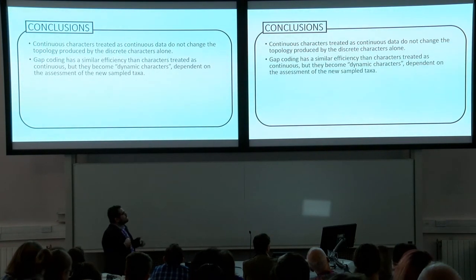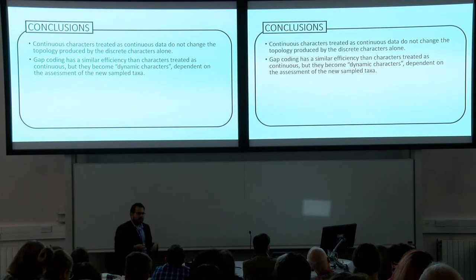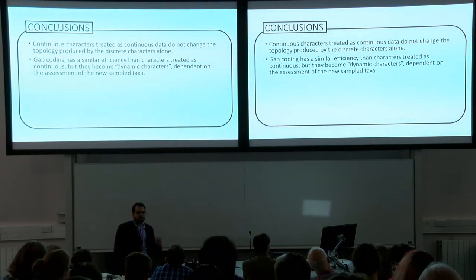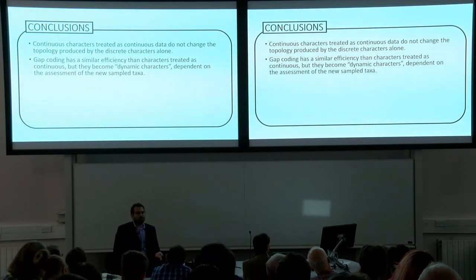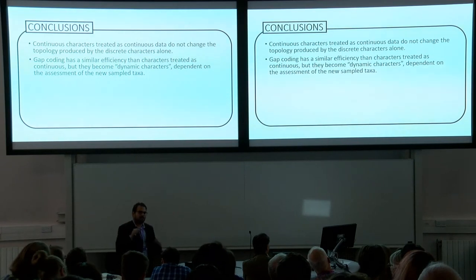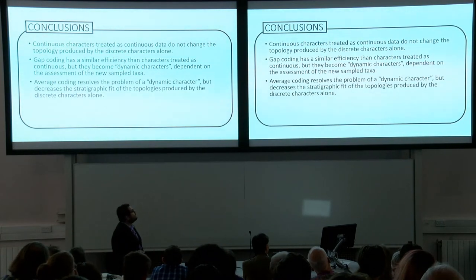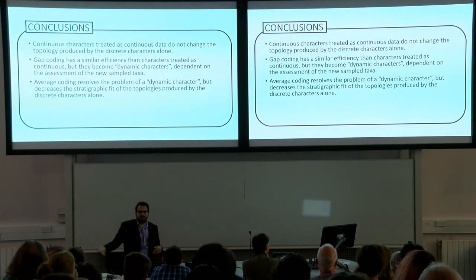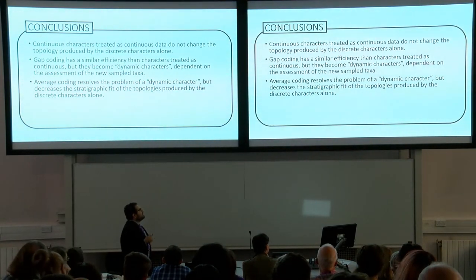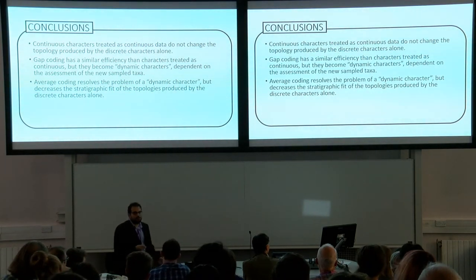Gap coding does produce a similar stratigraphic fit to the continuous one, but the problem is that it generates dynamic coding — every time you add a new basal sauropodomorph, because the differences between measurements are not that large, that could affect the way you're coding the character. Average coding resolves the problem of having a dynamic character; you don't have to change every time you add a new taxon, but it does decrease the stratigraphic fit of your topology.